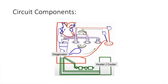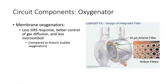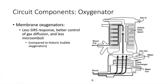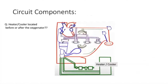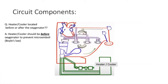Membrane oxygenators are essentially the only oxygenators in use today. They offer much less surface response, better diffusion control of gases, and less microemboli compared to historic bubble oxygenators. The heater-cooler uses a heated coil with a water bath to adjust blood temperature as it flows through. A common source of confusion is whether the heater-cooler should be before or after the oxygenator — it should be before, to prevent microemboli and outgassing: if blood already has a diffused oxygen component and is then heated, it can form microemboli, whereas heating before oxygenation avoids this.